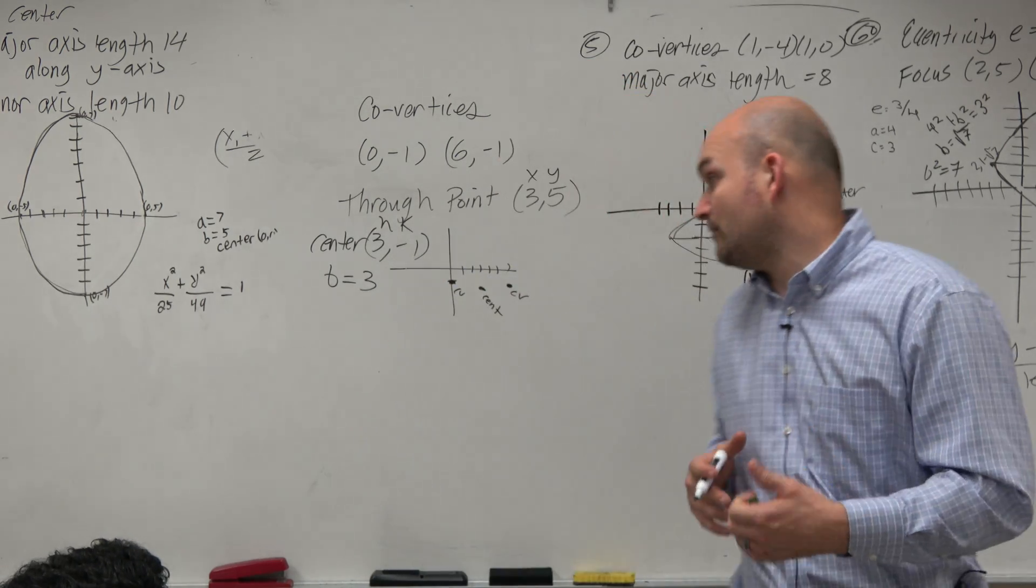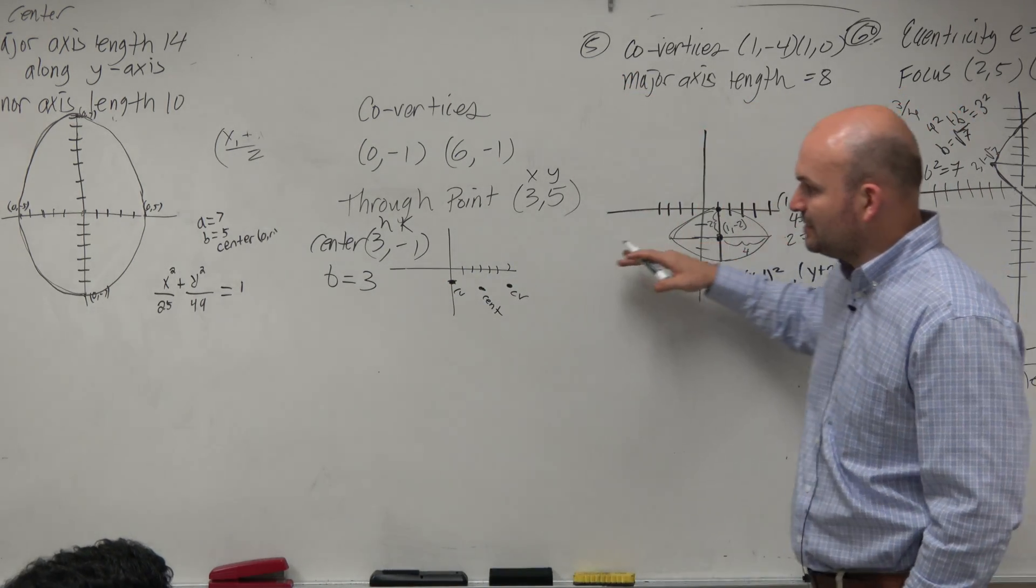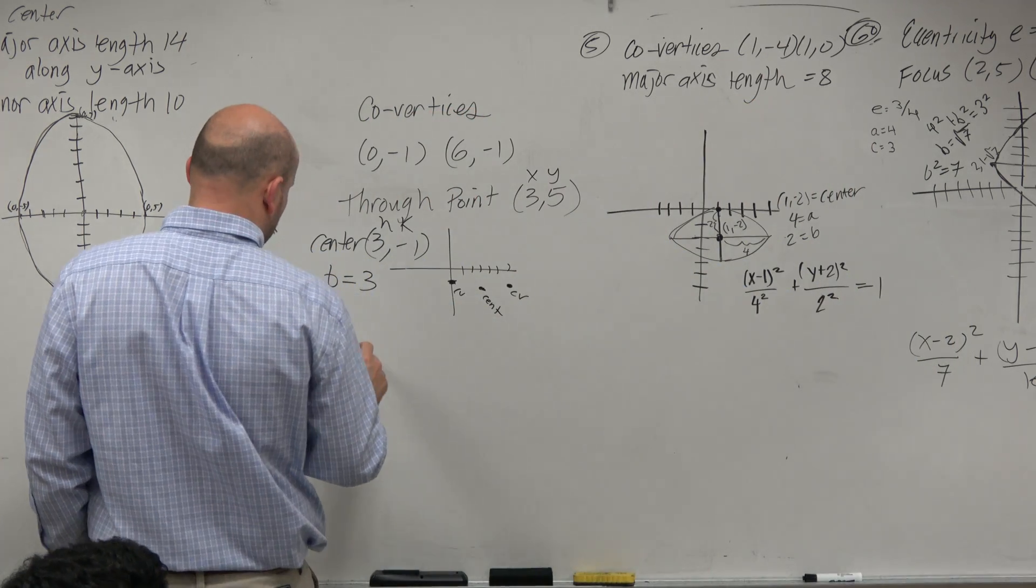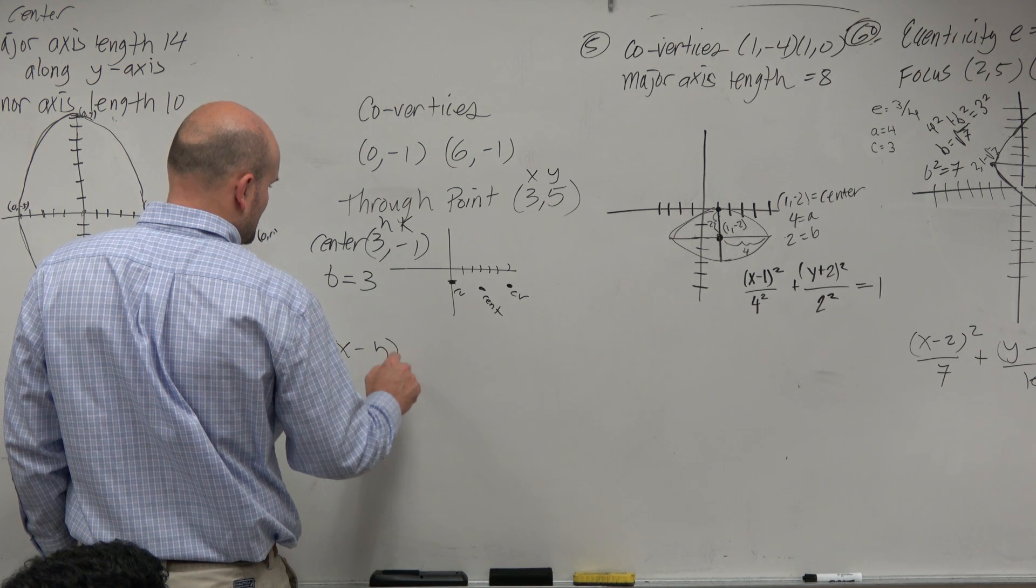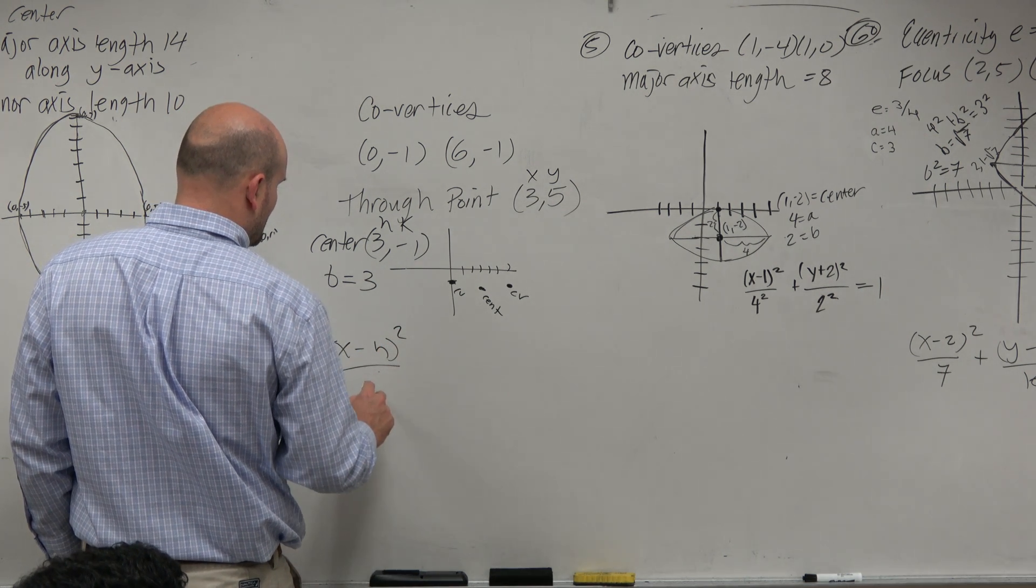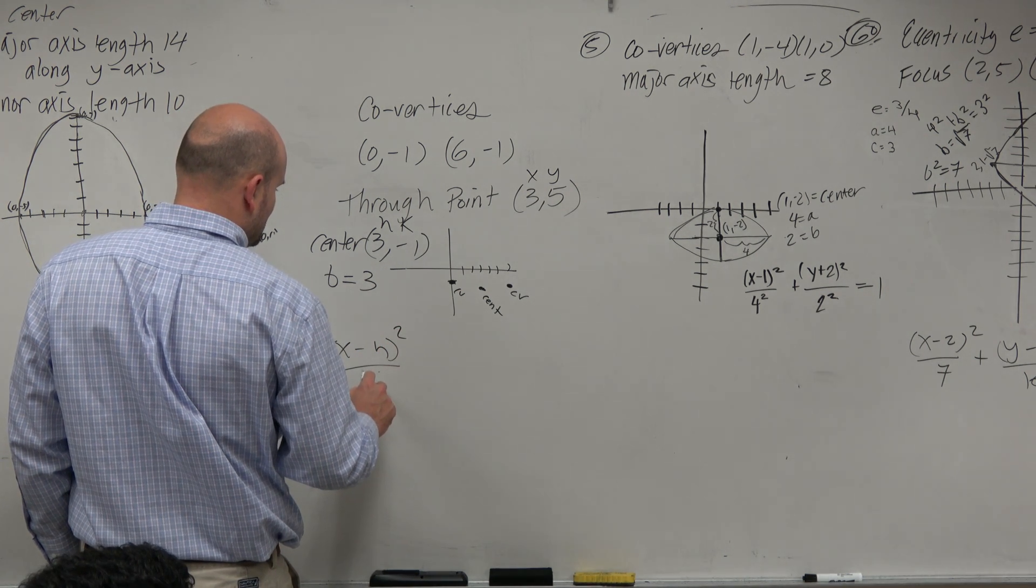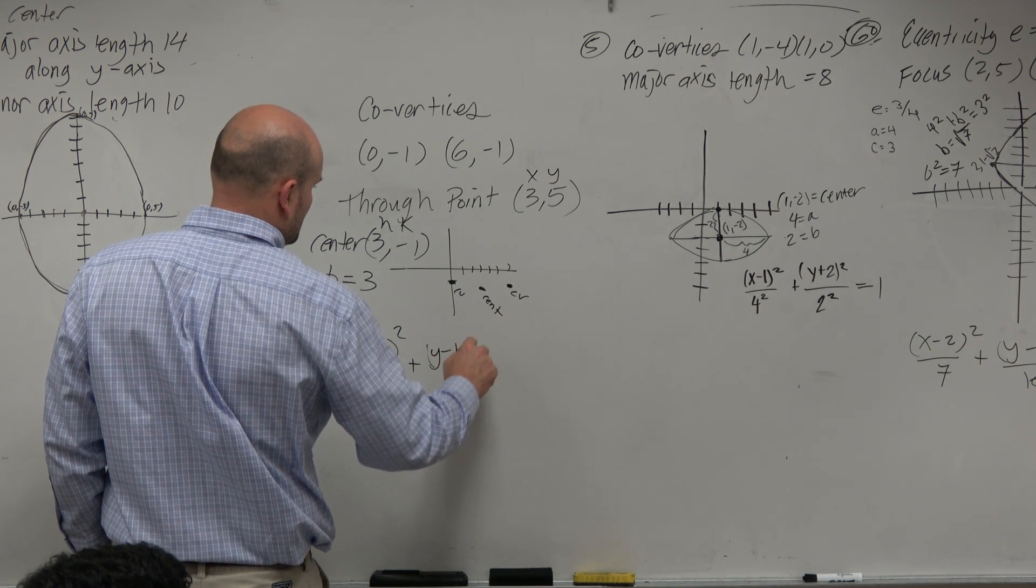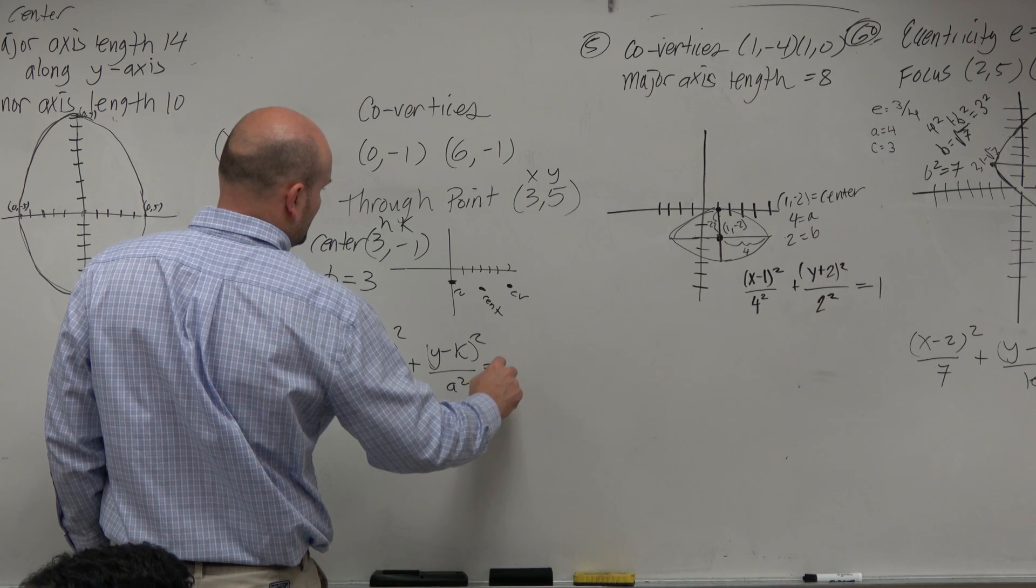Now, I look at my equation, and my equation is definitely going to be a vertical major axis, since my co-vertices are horizontal. So I'll have (x - h)² over b² plus (y - k)² over a² equals 1.